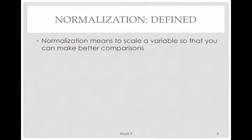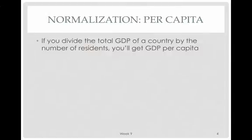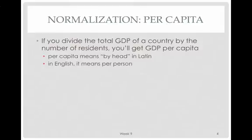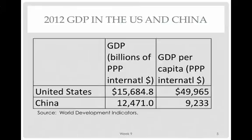Let's define normalization. Normalization means to scale a variable so that you can make better comparisons. By scaling, we just mean you divide by something sensible, like the population or the size of the economy. It makes a lot of sense in many cases to normalize by the population. If you divide the total GDP of a country by the number of residents, you'll get the GDP per capita. Per capita means 'by head' in Latin — in English it means per person.